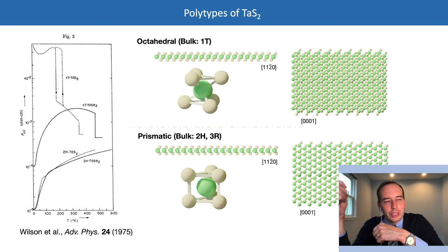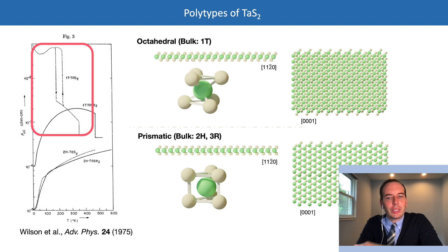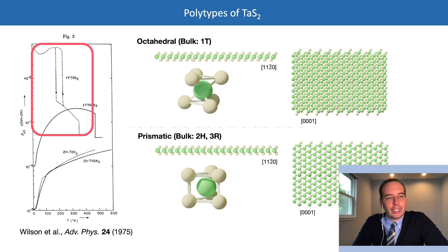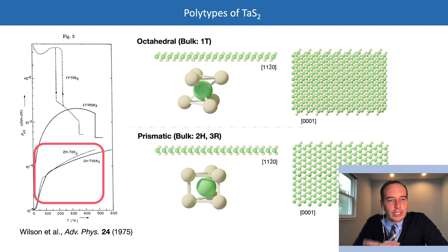In the octahedral phase, charge density waves form. Moreover, the structure of the charge density wave changes at different temperatures and drives unique metal-to-insulator transitions — the resistance jumps at two locations due to two changes in the charge density wave phase. However, the prismatic structure behaves like a simple metal across the temperatures we're interested in, with resistance simply decreasing with temperature.